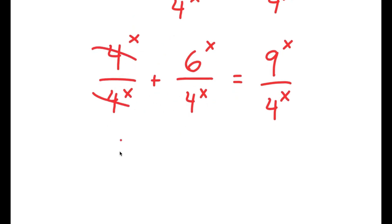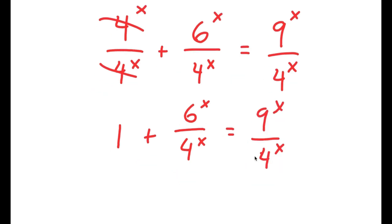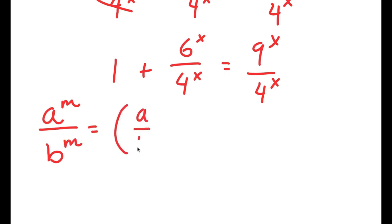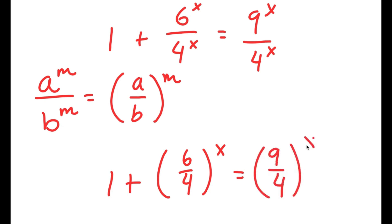Now, 4^x and 4^x cancel out, so I get 1 plus 6^x over 4^x is equal to 9^x over 4^x. And if I have something in the form a to the power of m over b to the power of m, this is equal to a over b to the power of m. So in this case, 6^x over 4^x equals (6/4)^x, and 9^x over 4^x equals (9/4)^x.